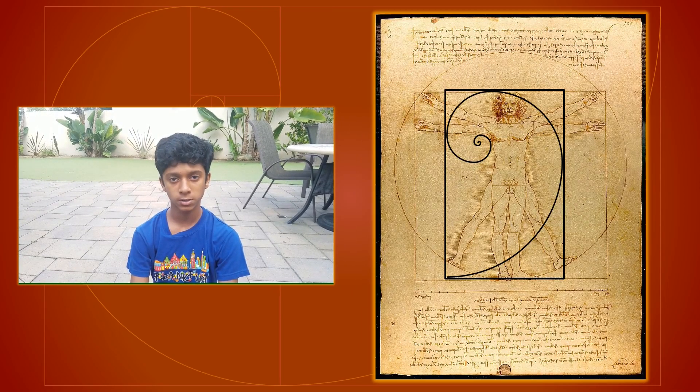The human body also has lots of examples of the golden ratio. It's everywhere. It's crazy to think that such a small ratio can be found in so many ways across the world, and it makes you wonder whether everything we know about this world is more connected than we thought.